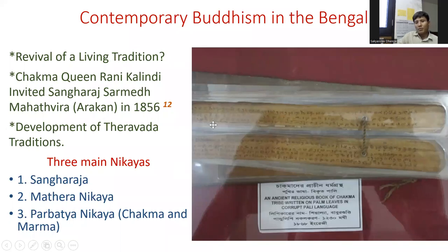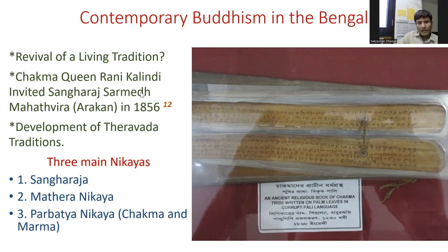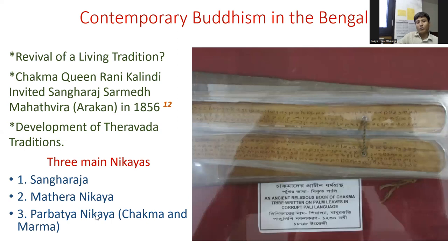These are ancient religious texts of the Chakma people of the Chittagong Hill Tracts of Bangladesh, who are the major ethnic minority Buddhist people of Bangladesh. Their queen, Chakma queen Rani Kalindi, invited Sangaraja Saramedha Mahathera from Arakan in 1856. After his arrival in the Chittagong Hill Tracts region, development of the Theravada tradition took place, and we see three main Nikayas flourish: Sangaraja Nikaya, Mahatero Nikaya, and Parvata Nikaya — the main three Nikayas in present Bangladeshi Buddhism.